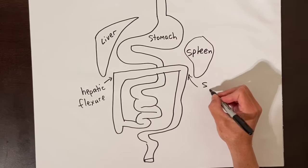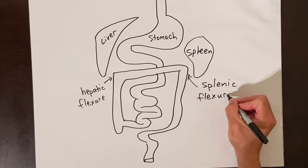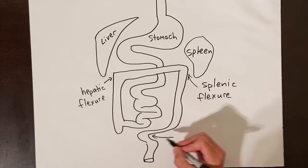The turn of the colon in the right upper abdomen by the liver is called the hepatic flexure, and the turn in the left upper abdomen near the spleen is called the splenic flexure.